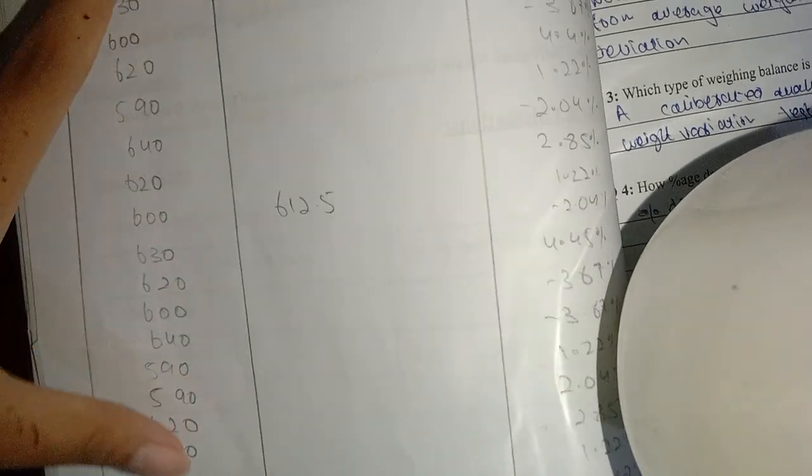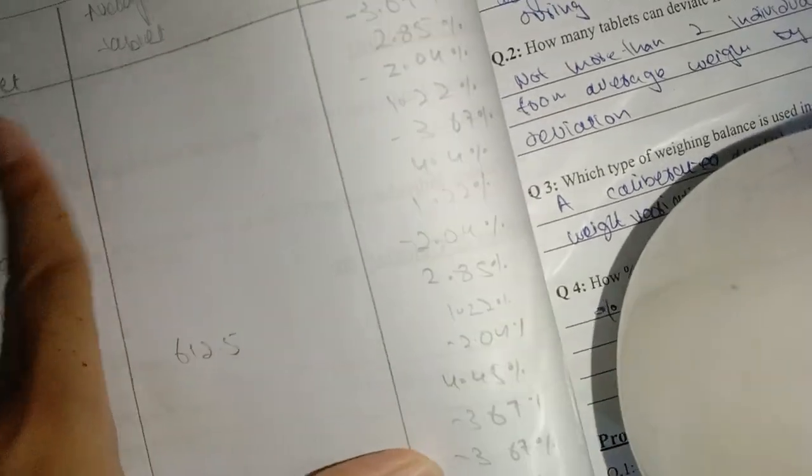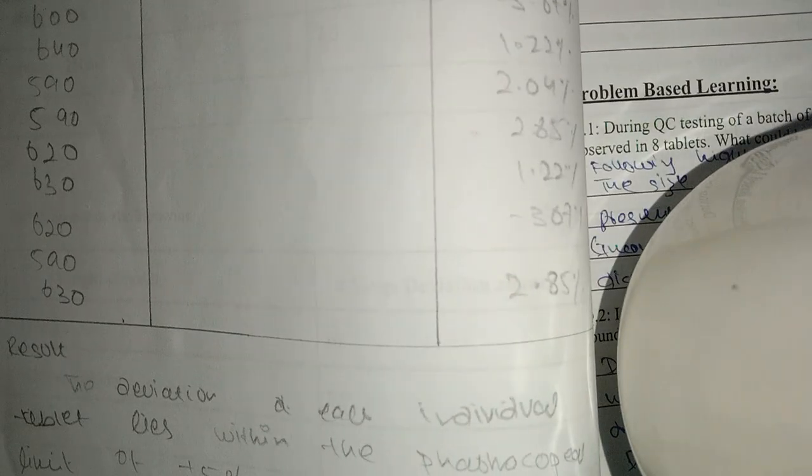Then you will complete your observations. The number of observations is 20. You want to calculate the average weight, and then you have to find the deviation for each. The deviation will be calculated at the end, and you will decide how the result will be based on these criteria.